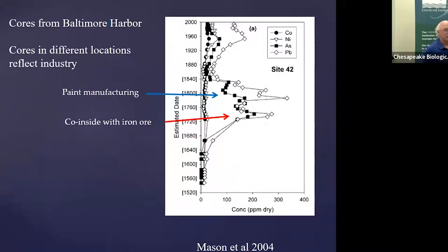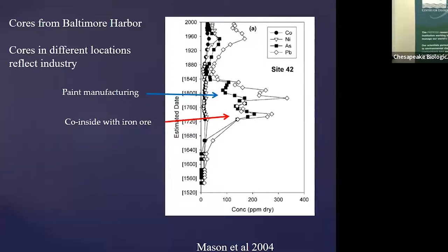All of this gets recorded in the sediment. Rob Mason, who was a professor here, worked on this with Jeff Cornwell. They did a series of cores throughout Baltimore Harbor and you can see the history of industrialization in the sediment, depending on where you take the core from. Paint manufacturing coincides with iron ore production. You can see peaks in arsenic and peaks in lead. Using radiocarbon dating to produce dates, you can see this huge industrial expansion in the 1700s up into the 1800s, and then another peak in the 1960s. As you move around the harbor, these profiles change a little bit depending on proximity to the resident industry.